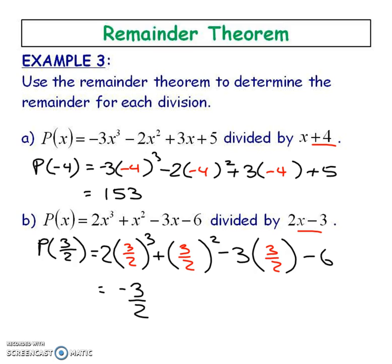Here's a popular question. Example number 3 use the remainder theorem to determine the remainder for each division. Now you don't have to do the long division again. Here is a dividend and what you're going to do is it's being divided by the divisor x plus 4. So we take the opposite of this guy negative 4 and we sub it into wherever there is an x in the equation.